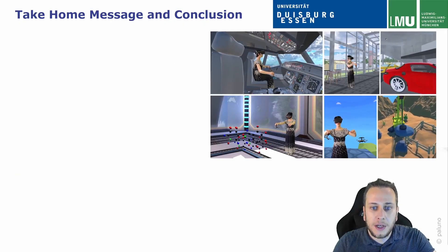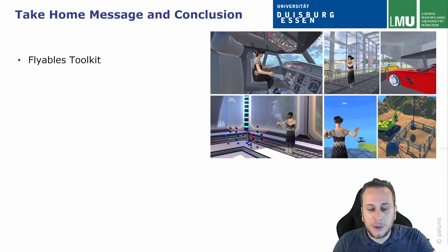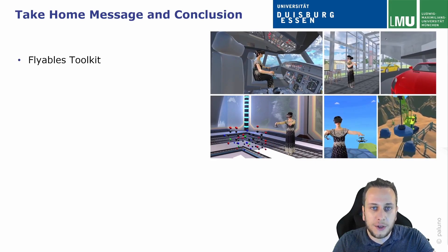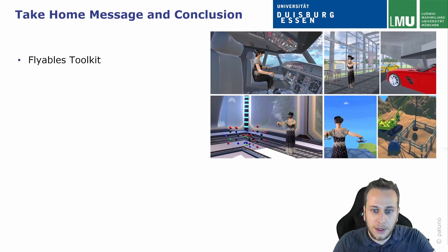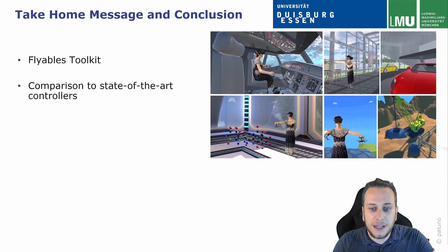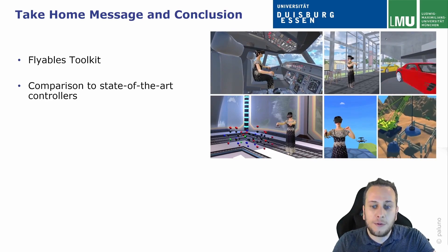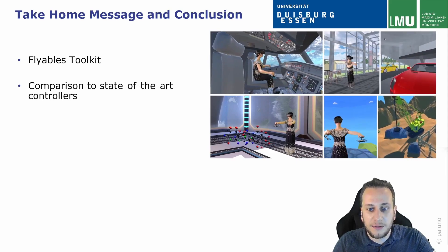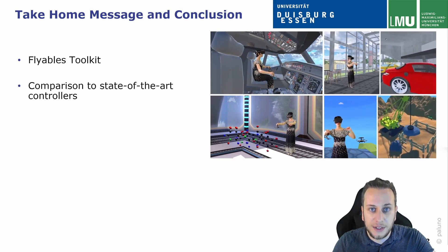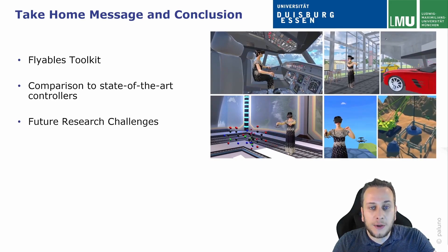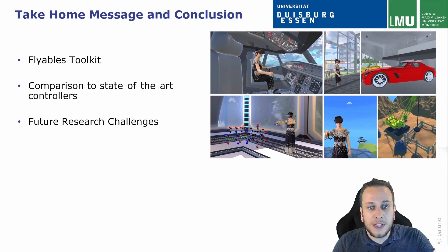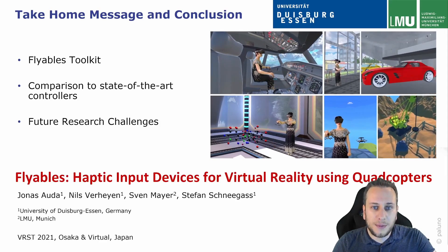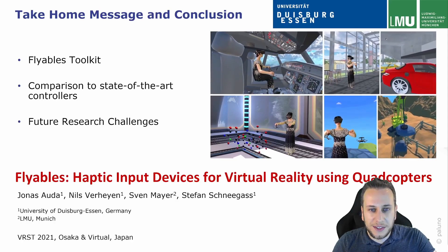To summarize, we presented the Flyables toolkit, which uses quadcopters with 3D-printed attachments to provide haptic input devices in virtual reality. In a user study, we compared Flyables to state-of-the-art VR controllers. We found that while controllers are easier to use and more precise, Flyables enable a fun and enjoyable interaction with VR content. To improve the Flyables toolkit, we outlined future research challenges that could help make Flyables more applicable. This concludes our presentation — I'm happy to answer your questions. Thank you.